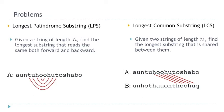The two problems we consider are LPS and LCS. In LPS, we are given a sequence of size n and want to find the largest palindromic substring. A string is a palindrome if it reads the same both forwards and backwards — meaning the first character equals the last character, the second equals the second-to-last, and so on. So given a string, find the largest substring that has that property.